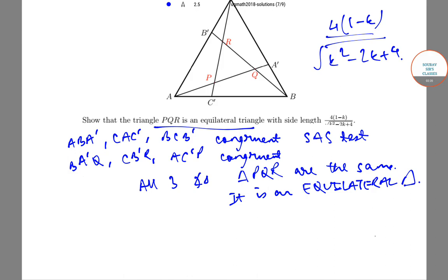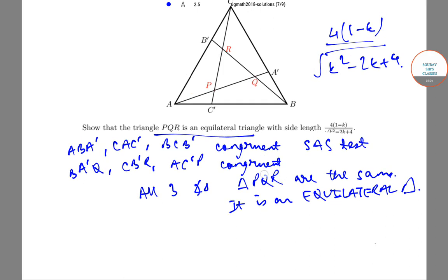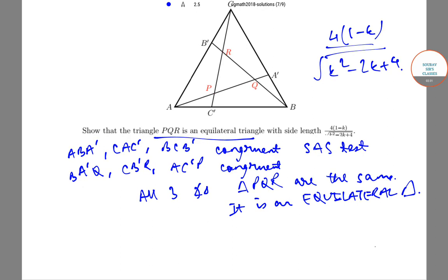Dropping the perpendicular bisector AO on side BC. Drawing this perpendicular bisector AO on side BC, we get the following.